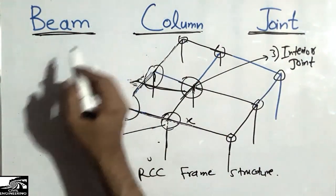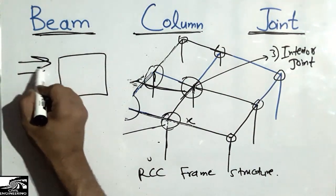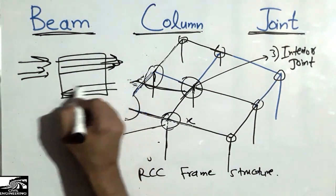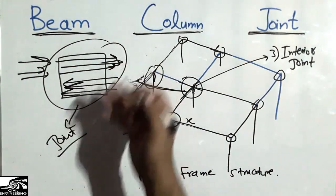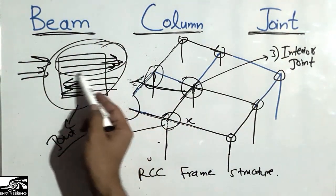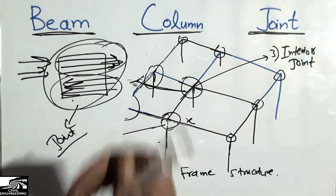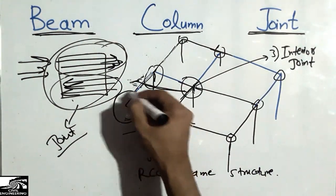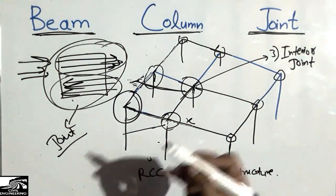This was all about the beam-column joint. It is very important to design this joint carefully, especially in seismic zones. When an earthquake occurs, the top reinforcement of the joint moves in one direction while the bottom reinforcement moves in the other direction, creating a critical stress condition in the joint. It should be well-designed according to the standards.